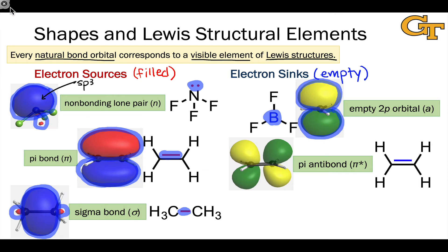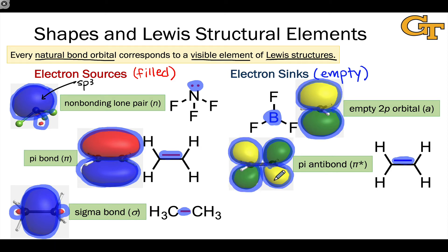We can also associate pi bonds in Lewis structures with pi antibonding orbitals. These have density above and below the molecular plane, similar to pi bonding orbitals, but they have a node perpendicular to the molecular plane between the nuclei and opposite phases on either side of that node. This leads to a butterfly shape for the pi-star or pi antibonding orbital. Every time you see a pi bond, keep in mind that a pi antibonding orbital is associated with that Lewis structural element. In excited states, this could be a singly-occupied molecular orbital — this is very, very common.